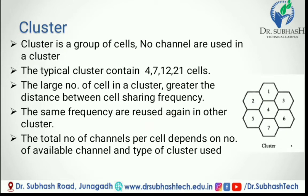Next topic is cluster. A cluster is a group of cells. No channels are shared within a cluster. The typical cluster contains 4, 7, 12, and 21 cells. The larger the number of cells in a cluster, the greater the distance between cells sharing the same frequency, which reduces interference. The number of cells in a cluster must be determined so that the cluster can be repeatedly placed within the area of the operator.